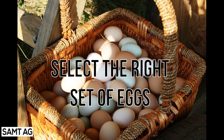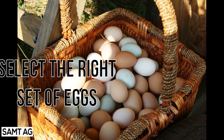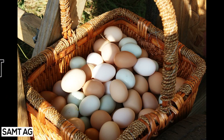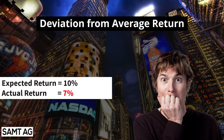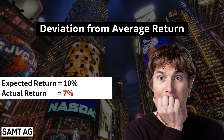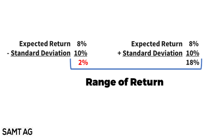But select the right set of eggs. Your risk as an investor is that the return on your investment will be lower than expected. According to MPT, this risk is the deviation from the average return. Each security has its standard deviation from the mean. If an asset has an expected return of 8% and risk of 10%, you can observe returns between minus 2% and 18%.